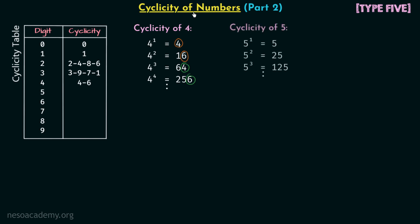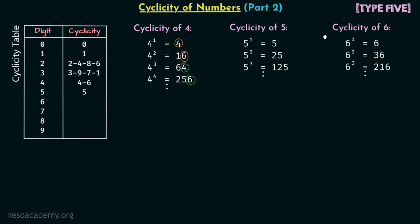Now let's find out the cyclicity of digit 5. We have calculated various powers of digit 5 and you can see that at the unit's place we are always getting 5. So the cyclicity of 5 is 5 — a single digit, similar to the cyclicities of 0 and 1.